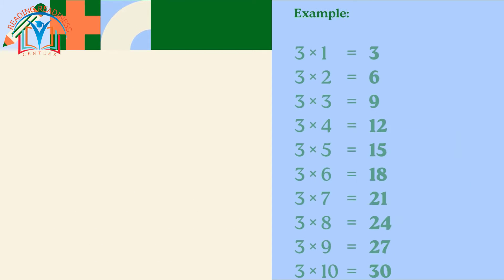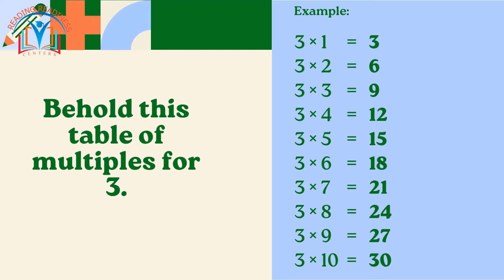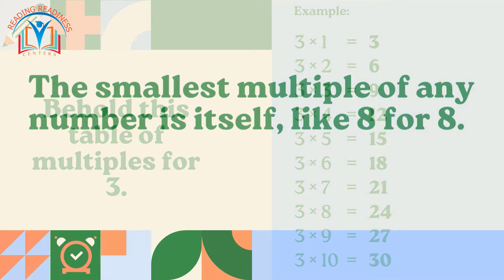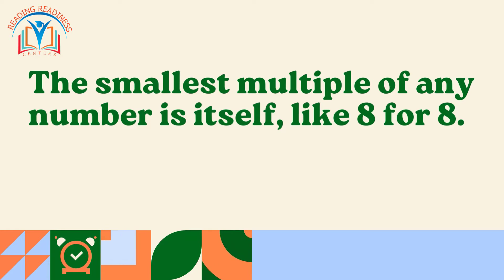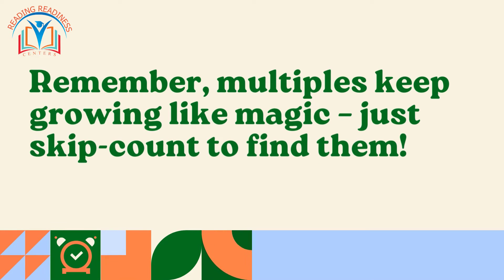Behold this table of multiples for 3. For example, 3, 6, 9, 12, and 15 are all multiples of 3 because they are made by multiplying 3 by different numbers. The smallest multiple of any number is itself, like 8 for 8. Remember, multiples keep growing like magic, just skip count to find them.